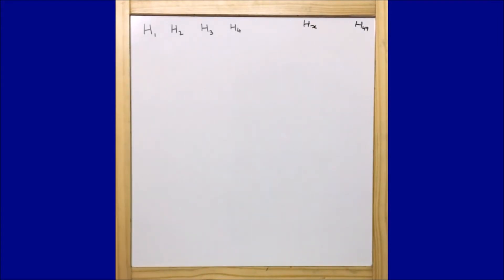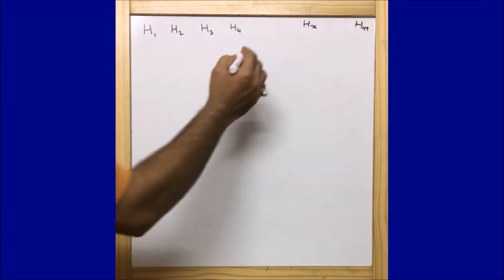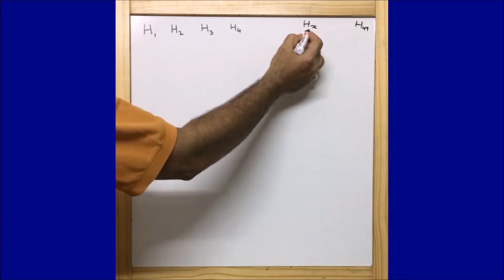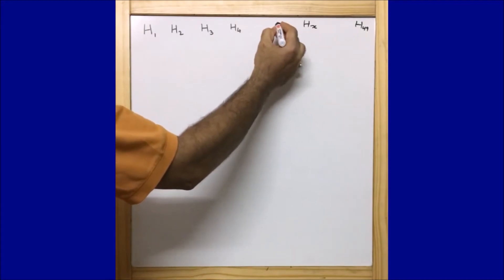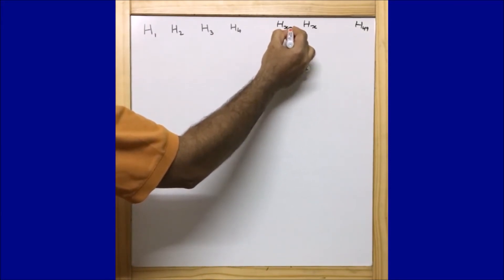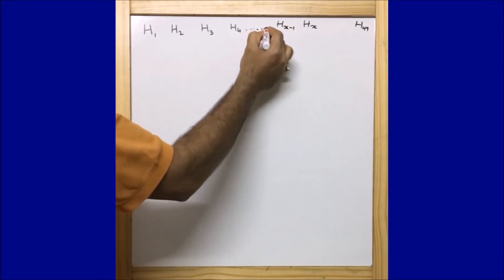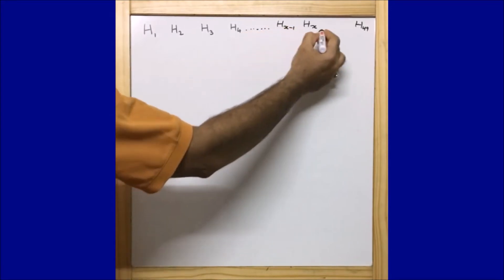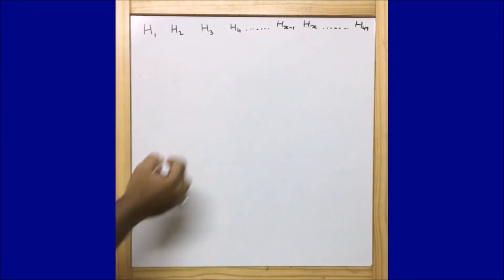The question says there is a value of x such that the sum of the numbers of the houses preceding house number x is equal to the sum of the numbers of the houses following it. If this is house number x, then the previous house would be house number x minus 1.